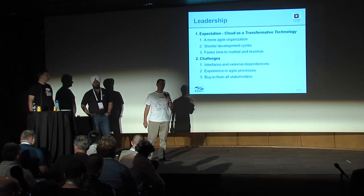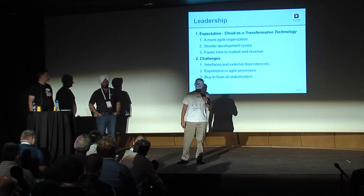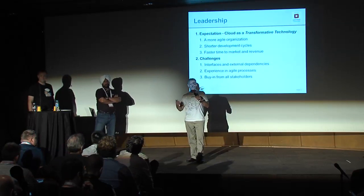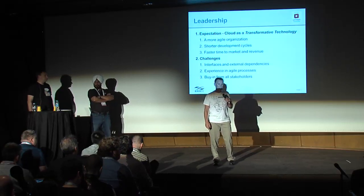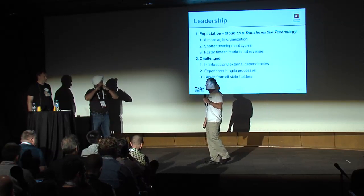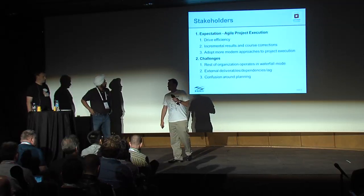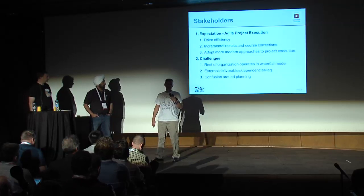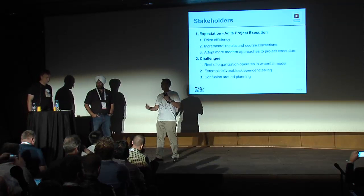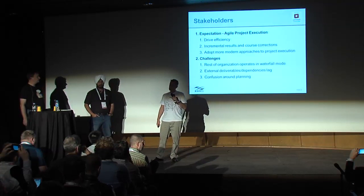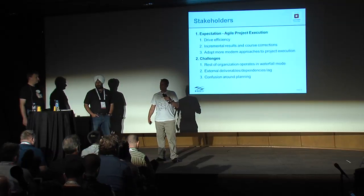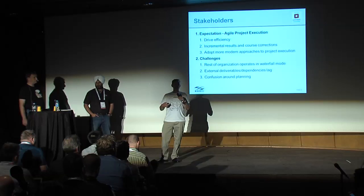You have to have buy-in from all stakeholders. The primary stakeholders who took the initiative are always bought in, but there are other stakeholders — operations teams, network groups — who are impacted and whose buy-in we need as well. The core stakeholders expect an agile project: iterations, incremental results, driving efficiency, and a more modern approach to project execution. Challenges include the rest of the organization operating in a waterfall model, which creates problems with timelines.